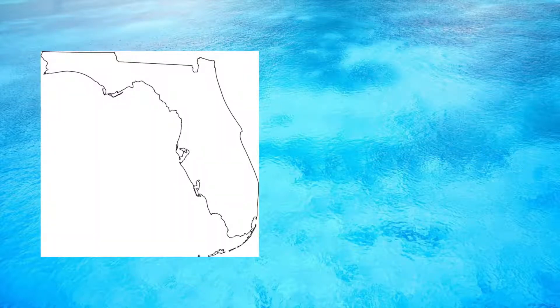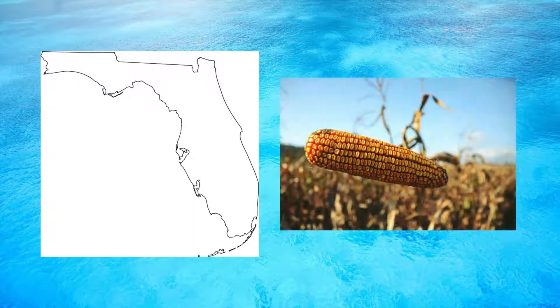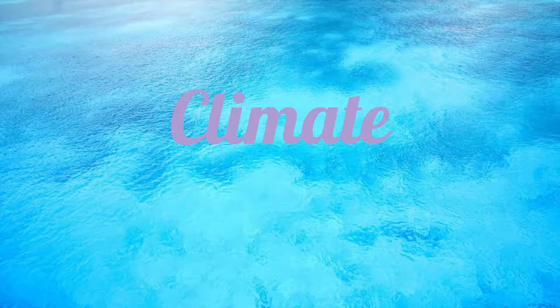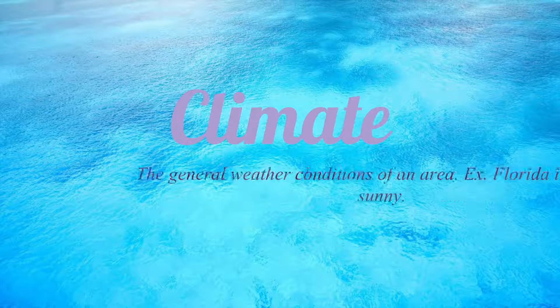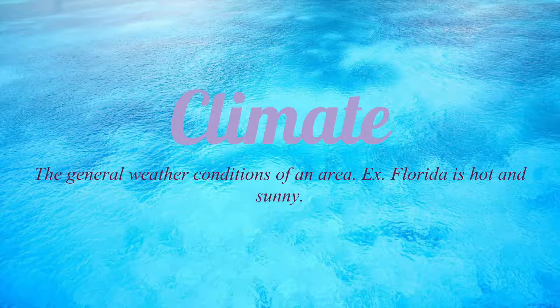Step 1: Choose a crop that will grow well in your area. For example, sweet corn grows well in Florida. What affects this choice is climate. Climate is the weather conditions prevailing in an area in general or over a long period.